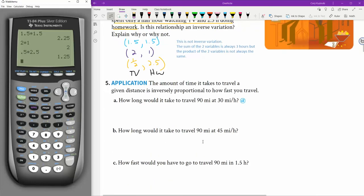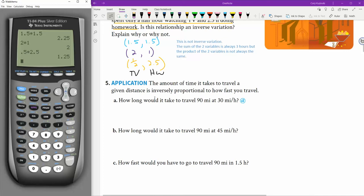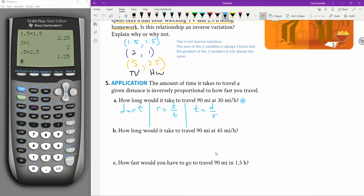The amount of time it takes to travel given the distance is inversely proportional to travel to, inversely proportional to how fast you travel. How long would it take to travel 90 miles at 30 miles per hour? Or, well, maybe we think about it like this, distance equals rate times time, but also rate equals distance divided by time, distance divided by time, or time equals distance divided by rate. All of those things are true.